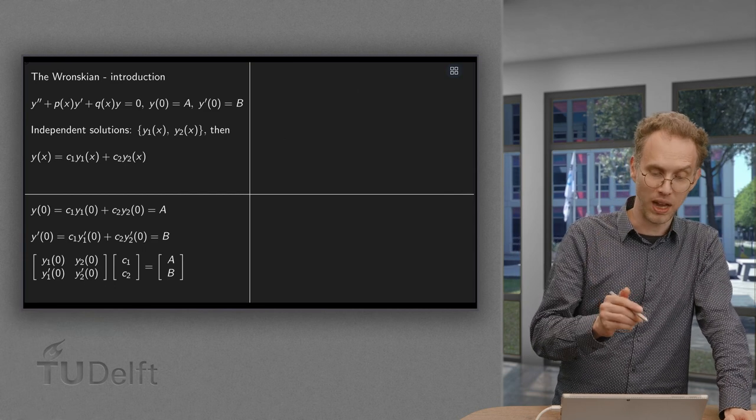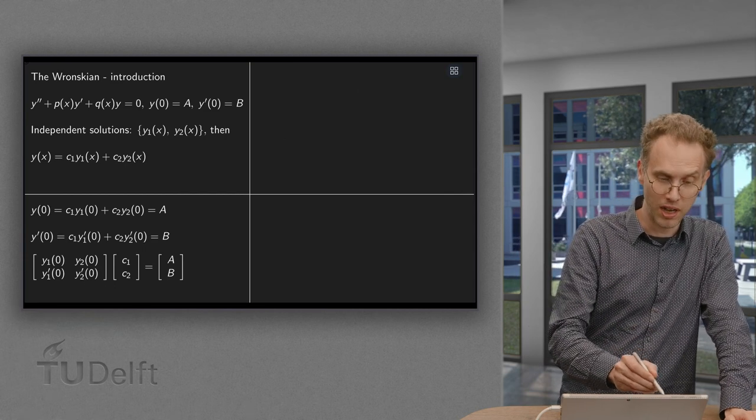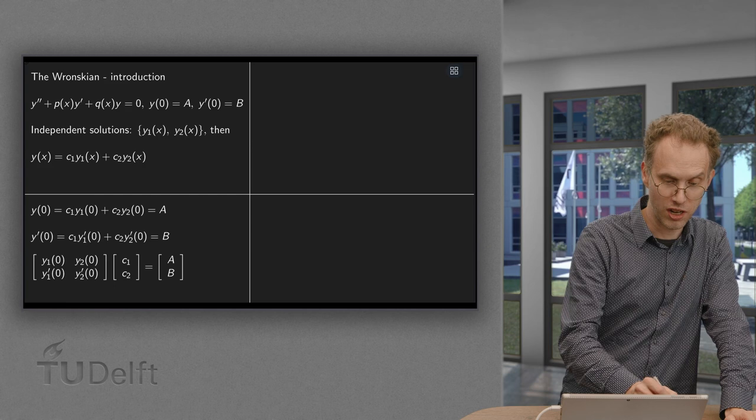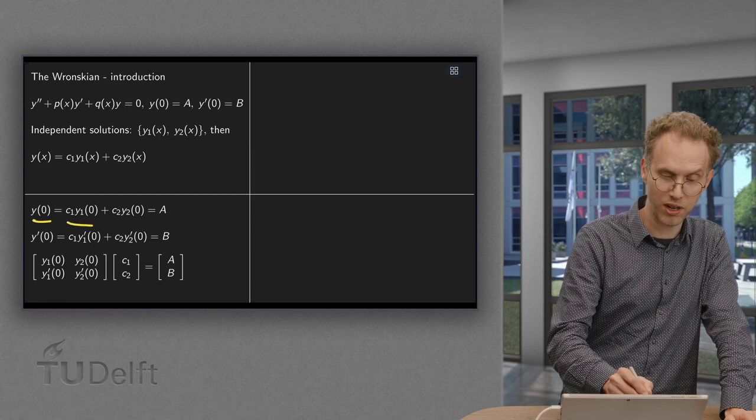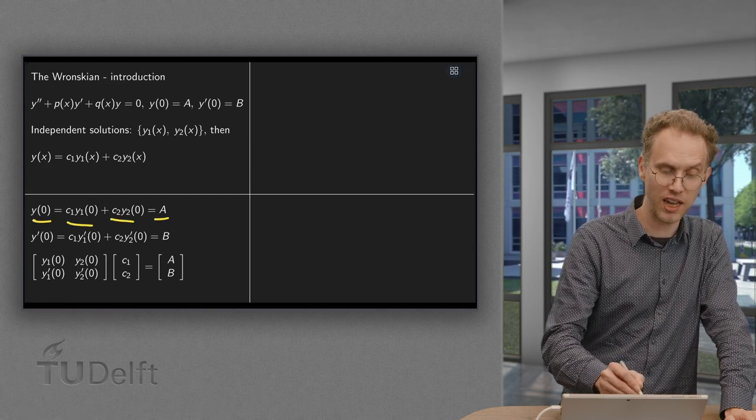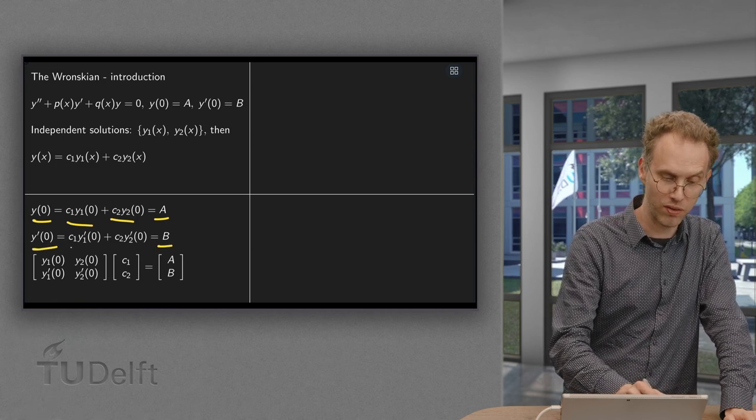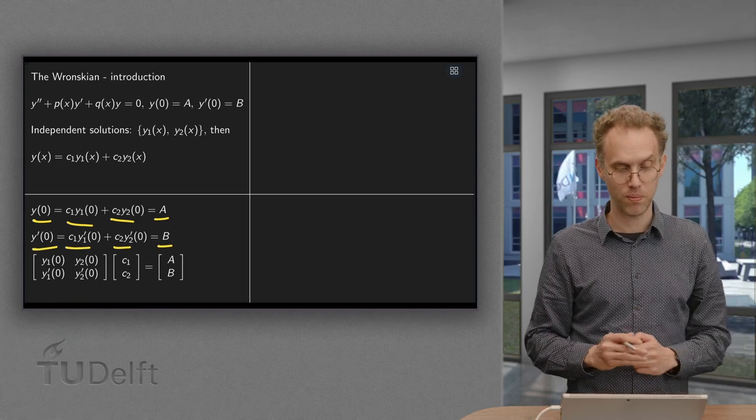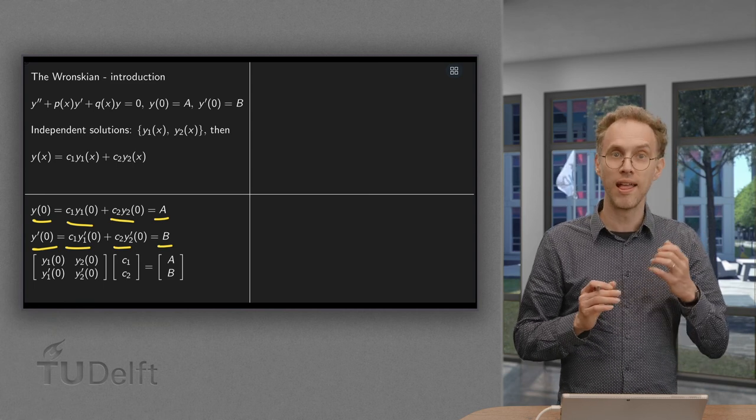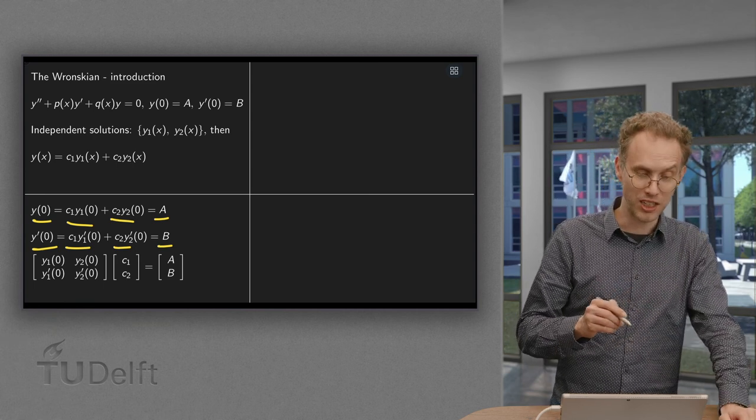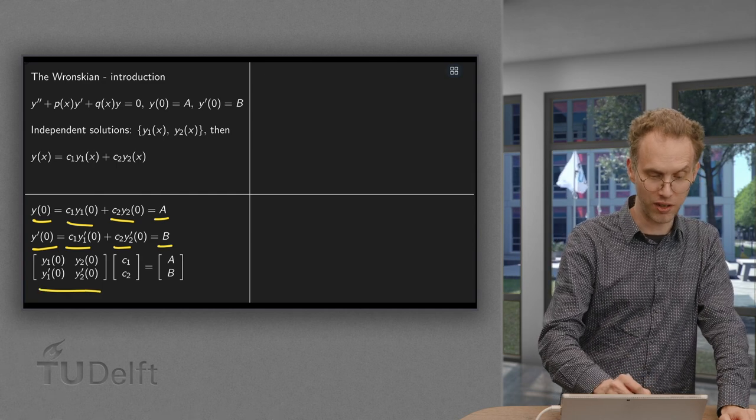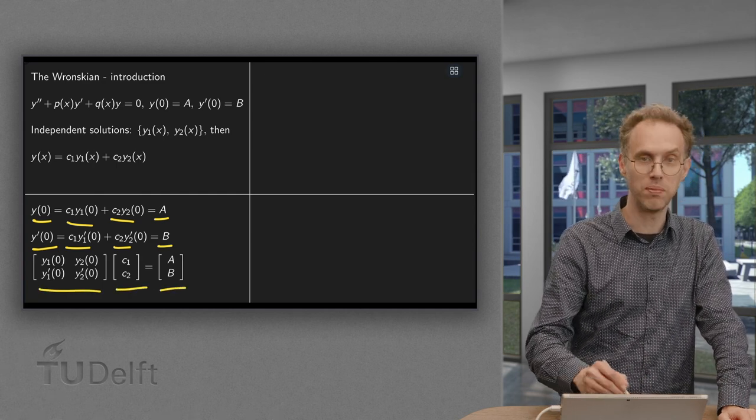Well, what we need to be able to do is to compute c1 and c2. So at 0 we have c1 y1(0) plus c2 y2(0) equals A, and similarly y'(0) = B equals c1 y1' plus c2 y2'. So if we write this as a matrix equation, we have this matrix over here, times c1 c2 equals A B.